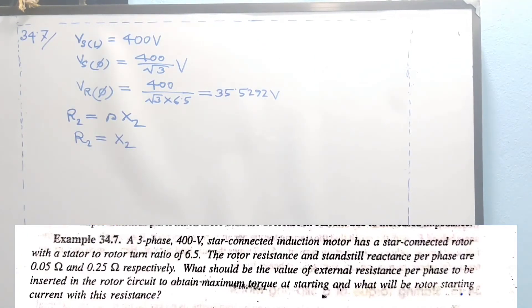The slip equation is S equals (n_s minus n_r) divided by n_s. At starting condition, the rotor speed n_r is 0. So S equals n_s minus 0 divided by n_s equals 1. Now, at starting condition, slip is 1.